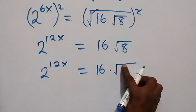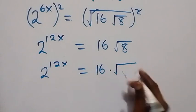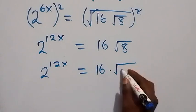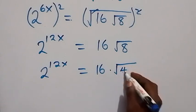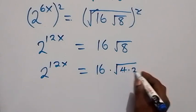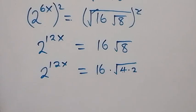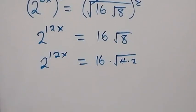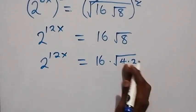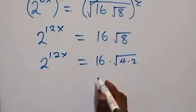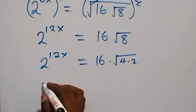We can write root 8 as root of 4 times 2. Since 4 times 2 equals 8, and root 4 gives us 2, we take that out. So we have 2 raised to power 12x equals 16 times 2 times root 2.